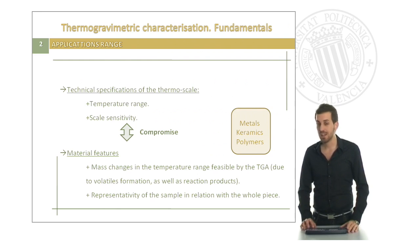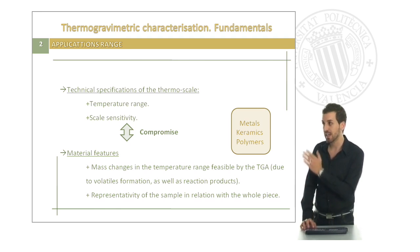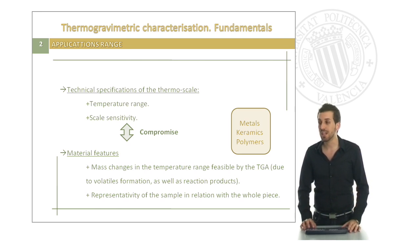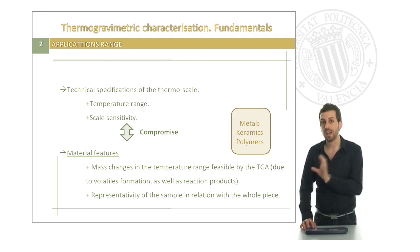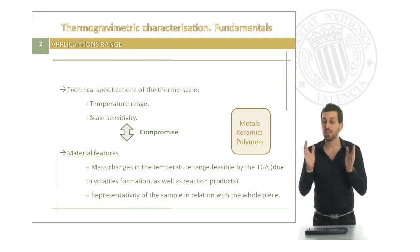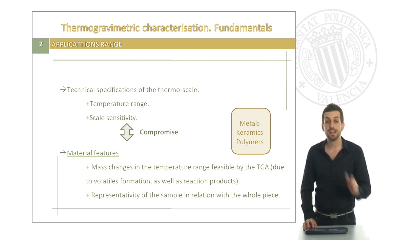What is the application range? When we are planning our experiments, we have to take into account two different features. First of all, we have to know the technical specifications of our thermobalance — that means basically what is the temperature range visible by our TGA and also what is the sensitivity of our scale. Then, thinking about our material, we have to know if the mass changes that we want to see are in the temperature range visible by our TGA. We also have to know if the sample that we have is representative in relation to the whole piece that we want to analyze. Regarding the kind of materials that we can analyze, we can go from metals to ceramics and then to polymers.